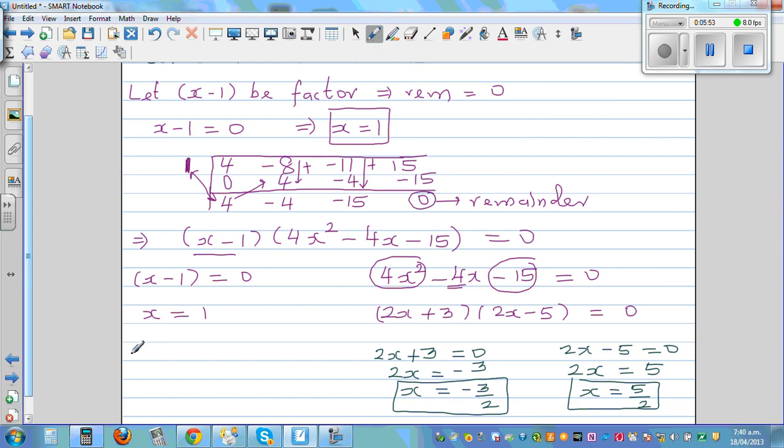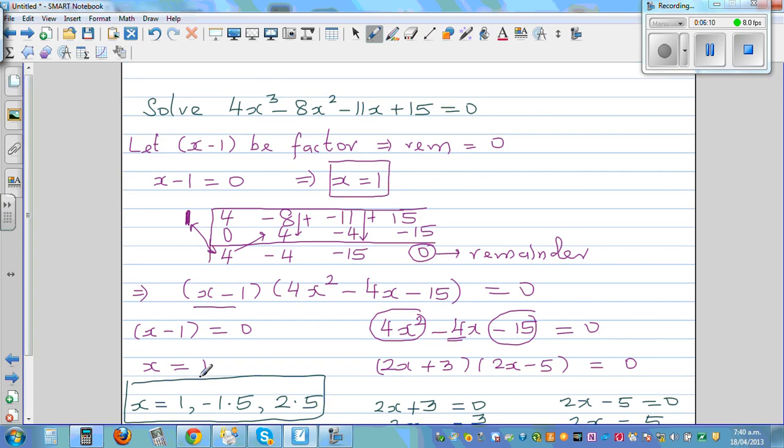So 3 answers, x is equal to 1, minus 1.5, and 2.5. You can confirm the answer by using a graphic calculator or if you put this back in this equation in place of x. You can put 1, it will be 0. If you put minus 1.5, it will be 0. And if you put 2.5, it will be 0.